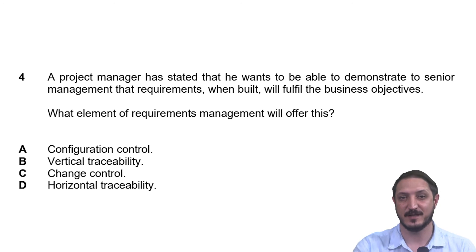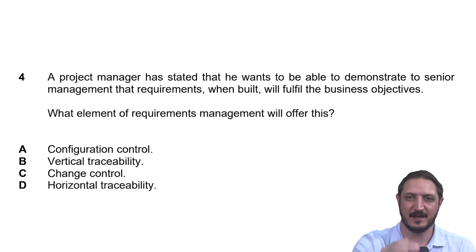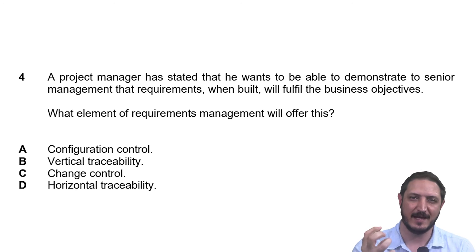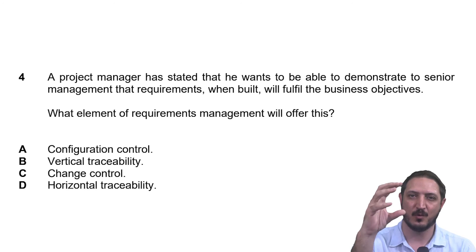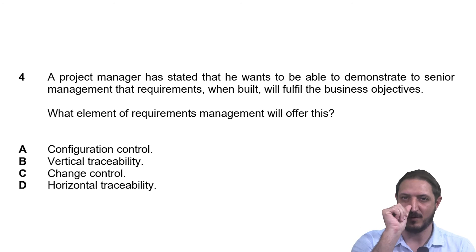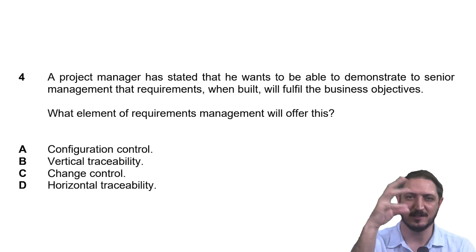Then we also have vertical traceability, which is a slightly different concept. This is more along the lines of looking at requirements up and down the hierarchy of requirements. We have the defined specifications at the bottom — the specific requirements for the system that have been analyzed and defined clearly, ready to be built. We then need to look back through the broader, more general requirements all the way up to the strategy, business objectives, and policies at the top.